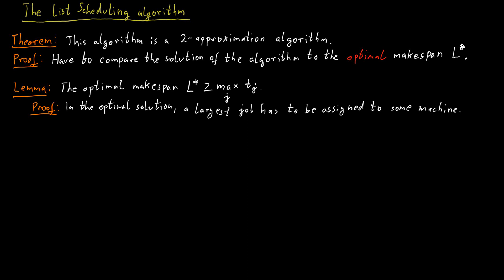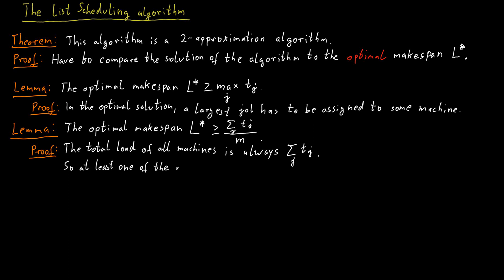The second easy lower bound for the optimal makespan is that the optimal makespan needs to be at least as large as the average load on the machines under any assignment. So if we just sum up all the processing times of all the jobs and divide it by the number of machines, then that is a lower bound for the optimal makespan. And this is because the total work to be done in the system by all machines together is just the sum of all the processing times of all the jobs. And so there must be one machine out of the m machines that processes at least a 1 over m fraction of that total work.